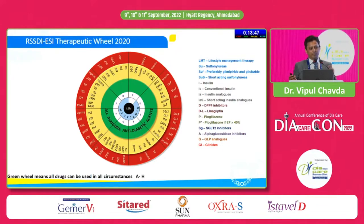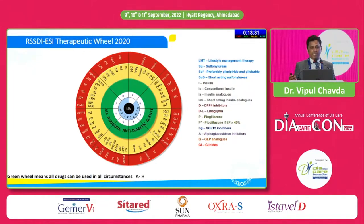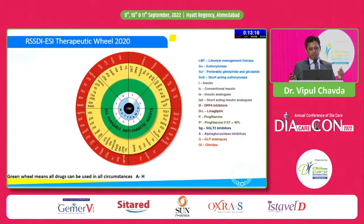Before prescribing medicine for any patient, you must consider these eight parameters. For Age: we are seeing type 2 diabetes patients in their teens as well as patients with diabetes for 50 years — medicine won't be the same for both. For BMI: we have two extremes — undernutrition and overnutrition. For CKD: in diabetic patients there is a risk of CKD, and we must check eGFR and albumin-creatinine ratio before prescribing.